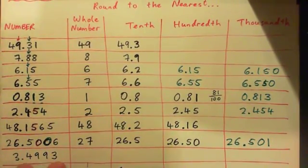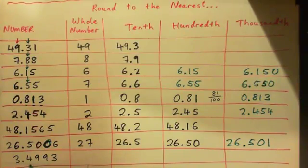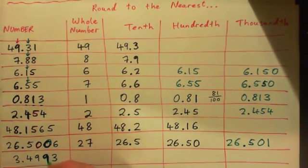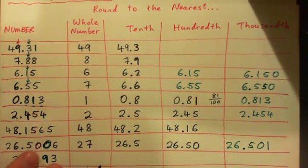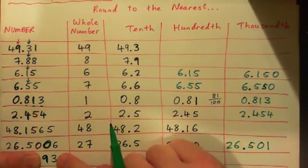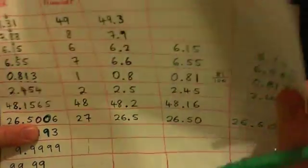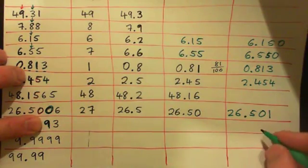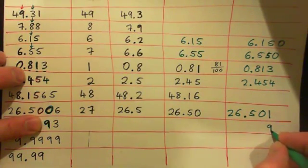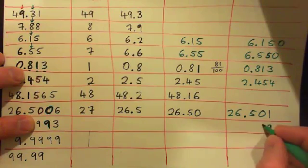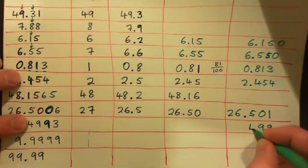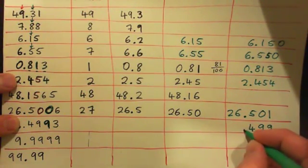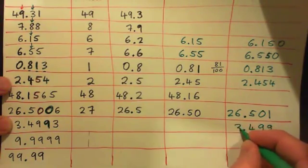Round this one to the nearest thousandth. I've got ones, tenths, hundredths, thousandths — so nine. I'm interested in this digit nine. What comes after the nine? Three. Do I round up or round down? We've got to round down, right? So that stays as a nine, and then I just plug in the rest — decimal point, three.